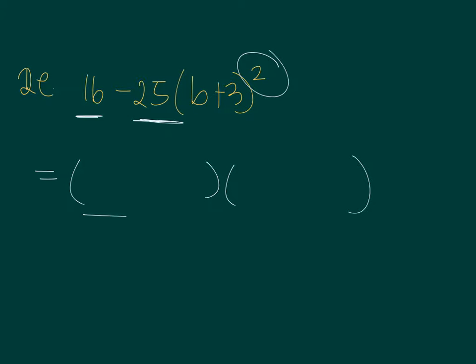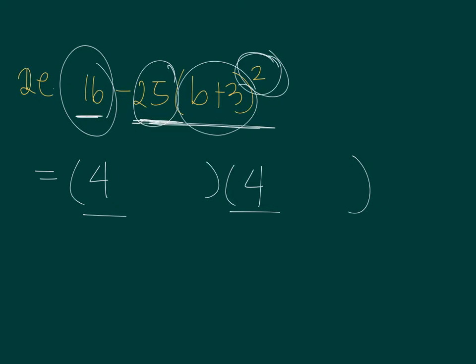So to get the first terms again, they will depend on the 16. So the values will be the square root of 16, which is 4. And then for the second, you have 25 and the B plus 3 squared. So you have the square root of 25 is 5, and B plus 3 squared will have B plus 3. It's like removing the square. And then that will be the same for the second factor.